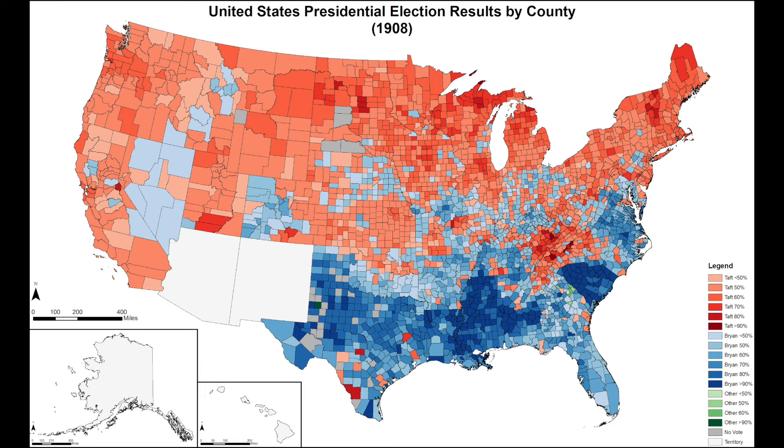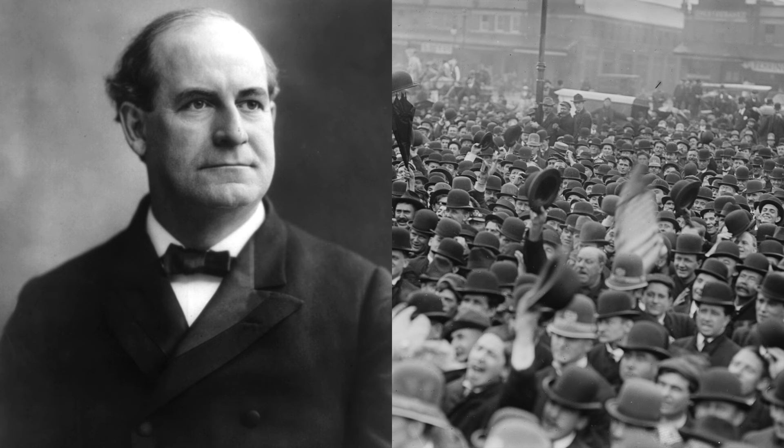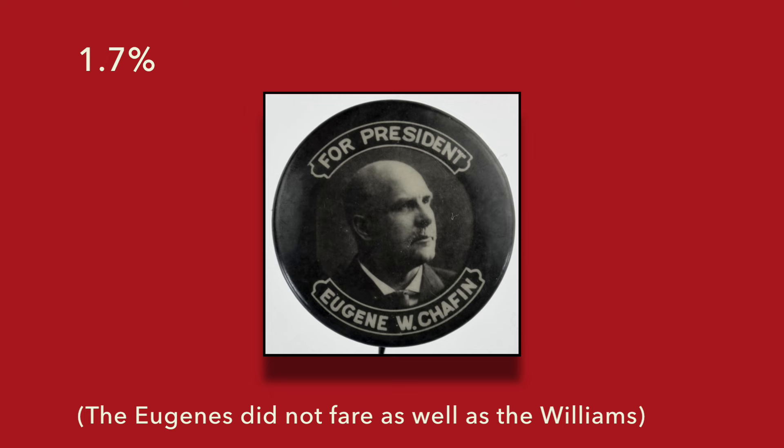Looking at this map, you can see that Taft did well mostly in the north and out west, but Bryan did well in the south again, and better in new random regions all over the country. Bryan's support was more diverse than ever, yet still too short. Eugene Debs came in third again with 2.8% of the popular vote. Eugene Chafin finished fourth with 1.7% of the popular vote. James Sherman became the 27th Vice President in American history.